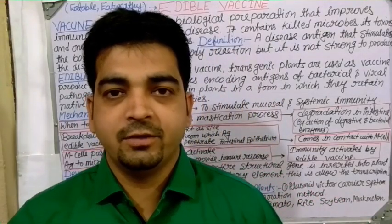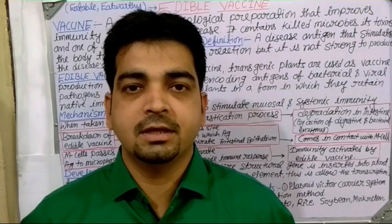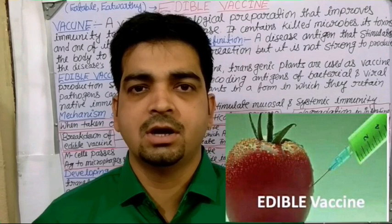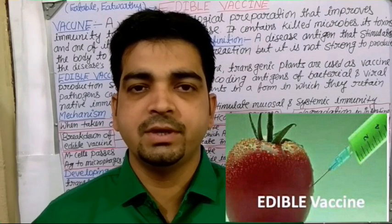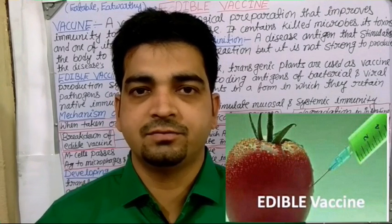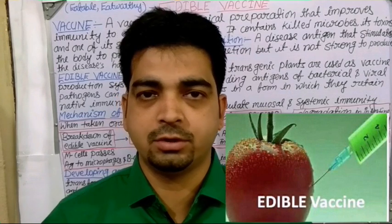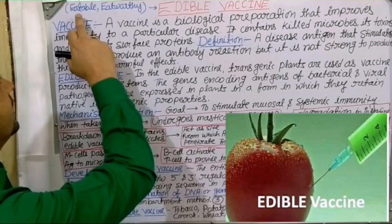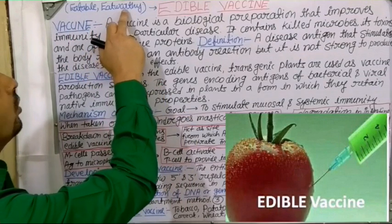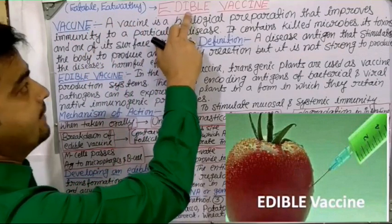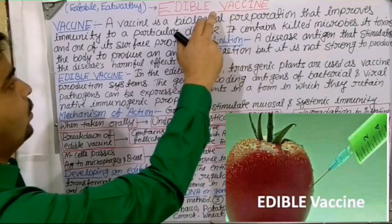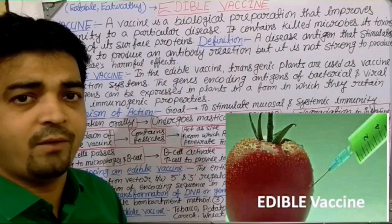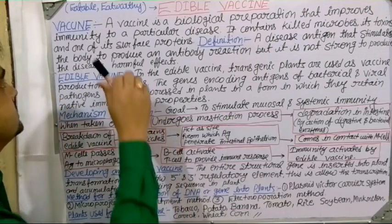Hello students, today we are going to discuss about the edible vaccine. Edible vaccine means the vaccine which we can eat, to vaccinate by oral route. That's what the edible meaning is — eatable or eat-worthy. Before going to the edible vaccine, we will understand a little bit about what vaccines are.